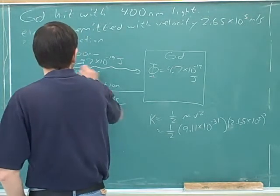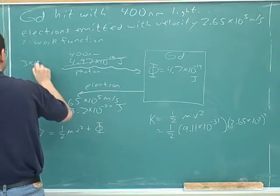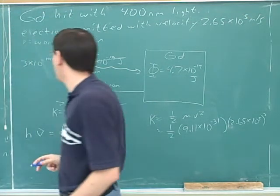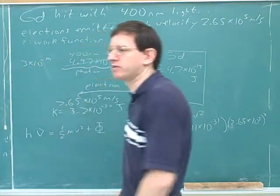Suppose that, in fact, the original amount of energy had been 3 times 10 to the negative 19. If we had shot a photon with 3 times 10 to the negative 19 energy at the gadolinium, what would have happened?